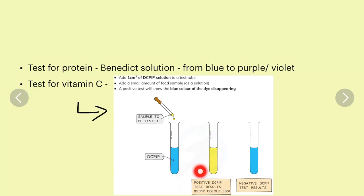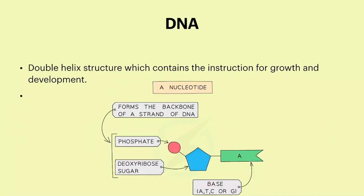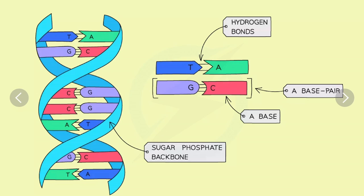DNA is a double helix structure which contains the instructions for growth and development. This is a nucleotide. The phosphate and deoxyribose sugar form the backbone of a strand of DNA, and this is the base, which will be either A, T, C, or G - adenine, thymine, cytosine, and guanine. The adenine and thymine will always bond together, and the guanine and cytosine will be together.